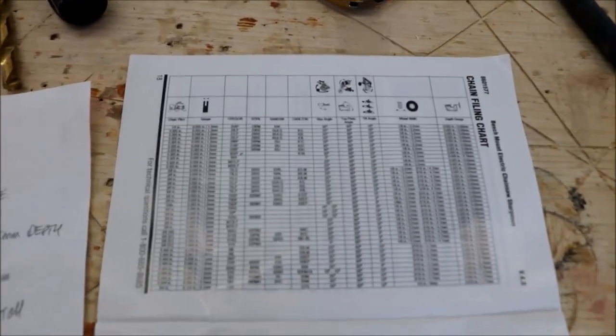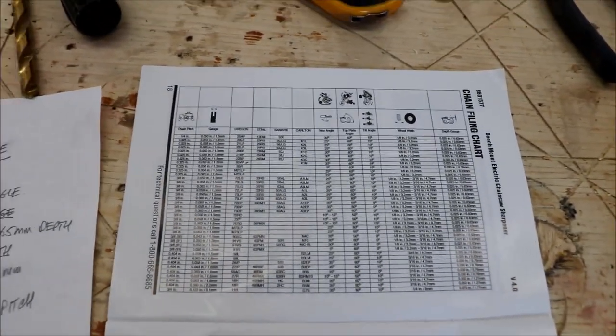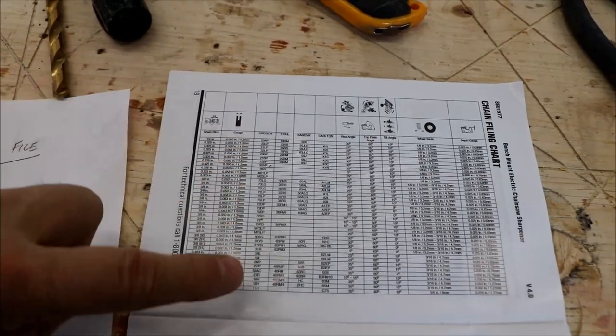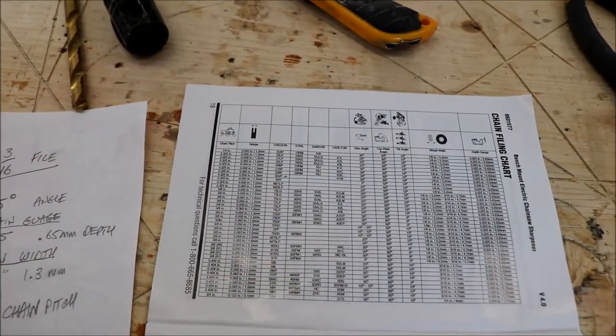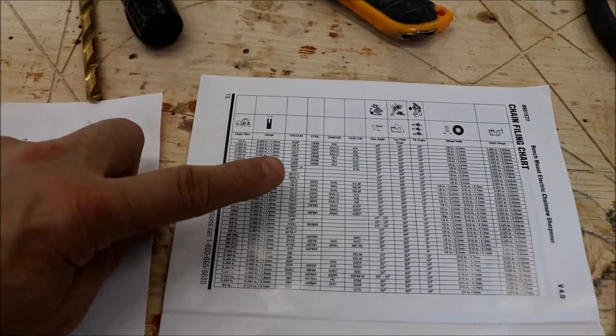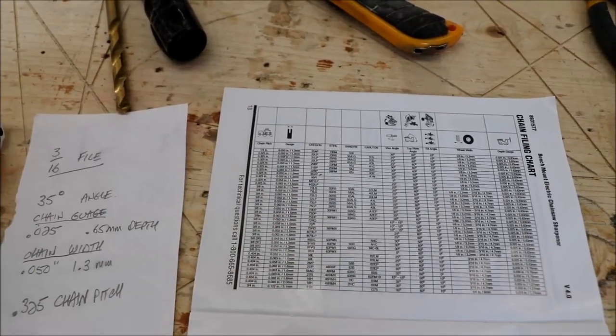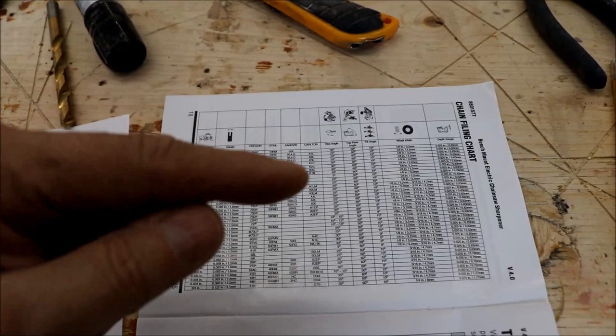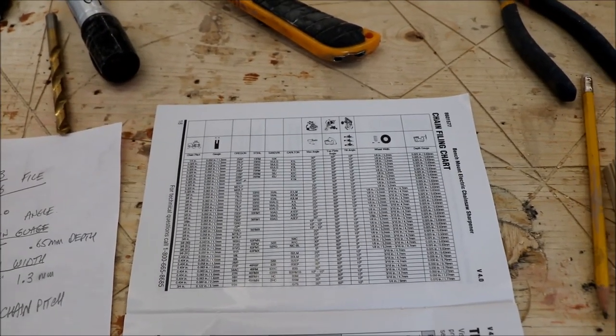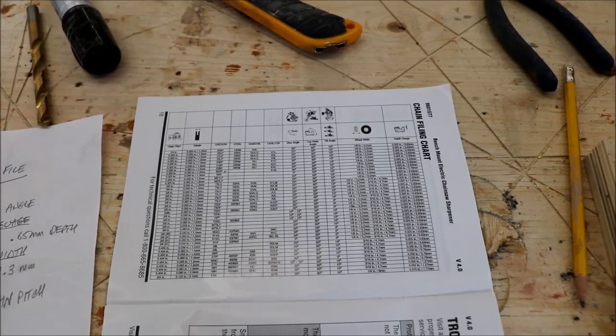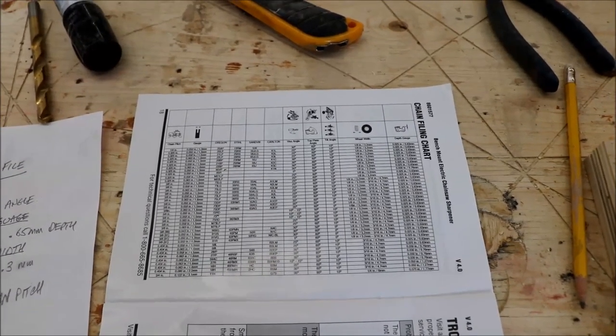I've got the original box from the chain itself. It's got all the critical information. It's an Oregon 95BP, and that'll come into play when we look at the manual. All the information here, the depth, the gauge, and so on and so forth. Now you can cross reference that against the list that they have in the manual. They do have different chain brands here, and if you can match up your chain, I think ours is in here, right here, 95BP. Over to the right it'll tell you all the settings to put the machine at. As it turns out, I don't need a 3/16 stone, I need the 1/8 inch stone, so I got to change that out quickly.